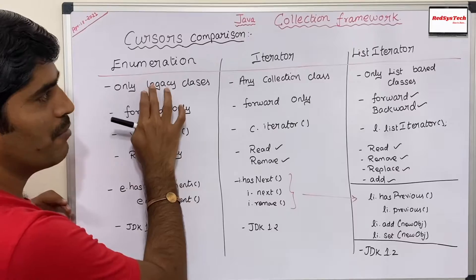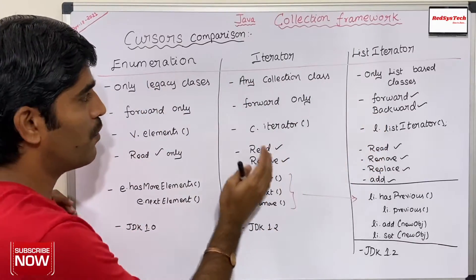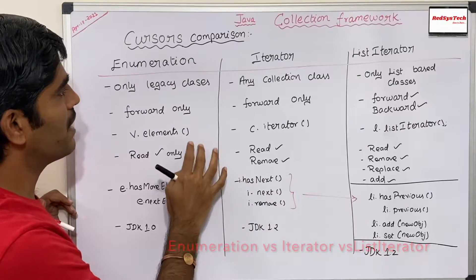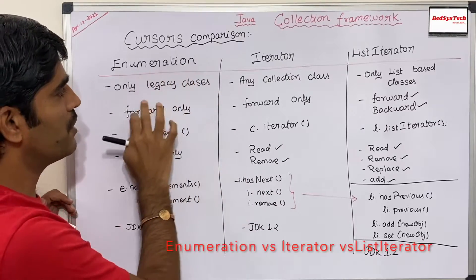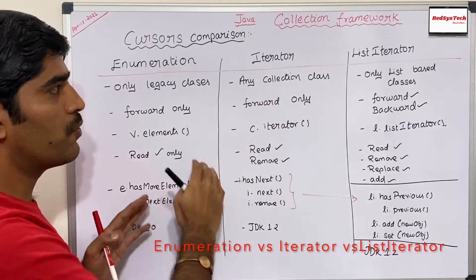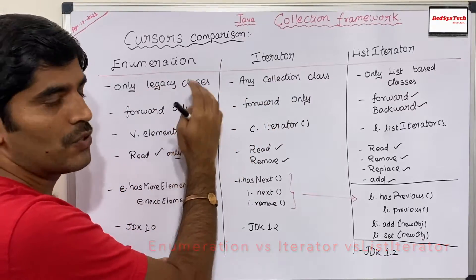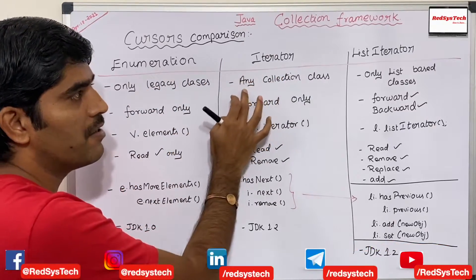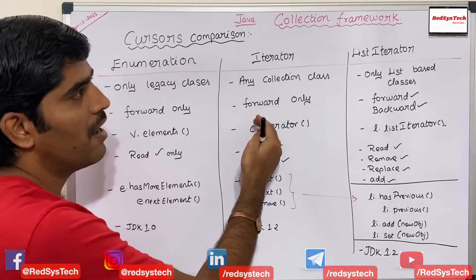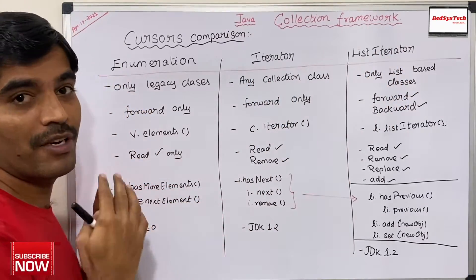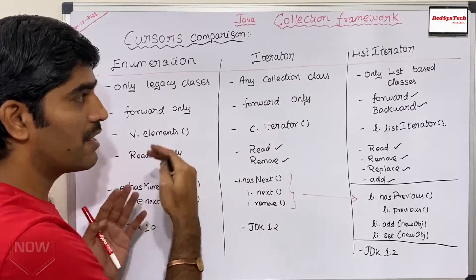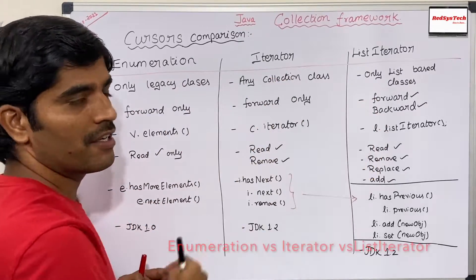We have Enumeration, Iterator, and ListIterator. I have listed all the differences between these three interfaces. Enumeration was introduced mainly for legacy classes. In order to avoid this limitation, the Java Oracle team introduced Iterator, which can be used for any type of collection classes. ListIterator is mainly for list-based classes. This is the reason behind why they introduced these three interfaces in Java.